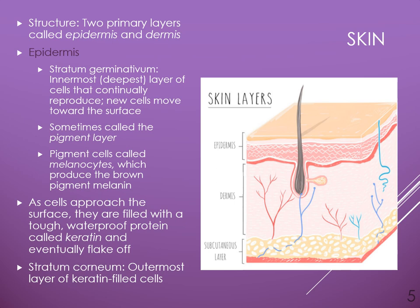The melanocytes are responsible for giving color or pigment to our skin. As cells approach the surface, working their way up towards the stratum corneum — which is the outer layer — they are filled with a tough, waterproof protein called keratin. Once they make their way all the way to the surface, they eventually die and flake off, making up that nine pounds of dead skin that we shed each year.